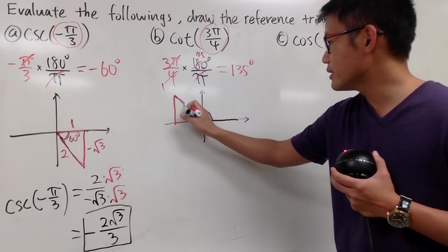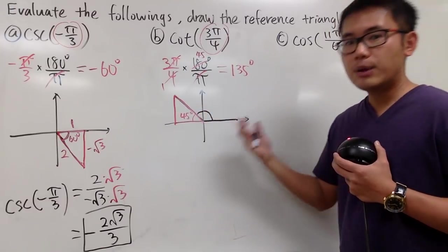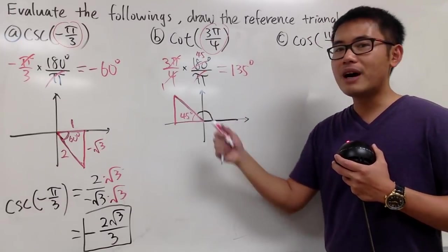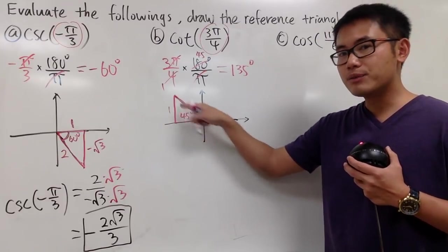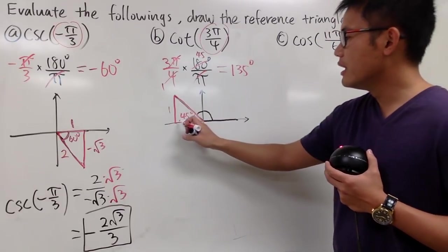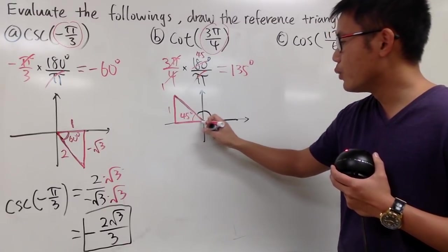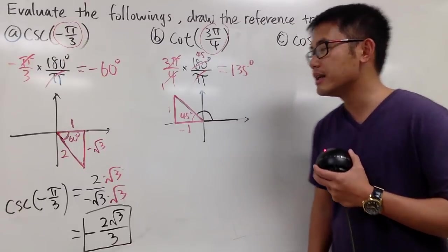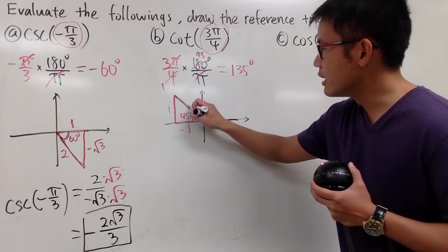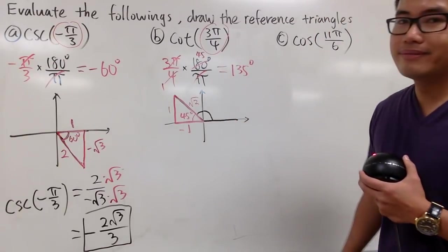We're talking about a 45-45-90 special triangle. So the sides will be 1 right here, and that's positive because it's above the x-axis. Here it's going to be 1 as well, but it's negative because it's on the different side. And then for the hypotenuse, it's square root of 2.